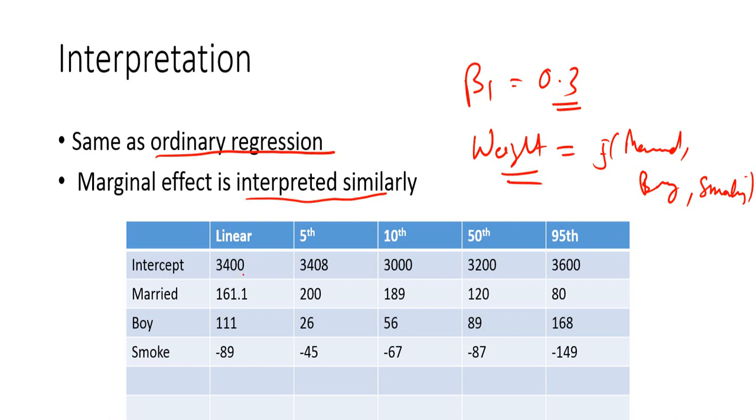In the linear regression, it predicts that the intercept is 3,400. If somebody is married, then the weight of the baby goes up by 161. That's the difference. On average, the weight of a kid or an infant born to a married woman compared to the unmarried woman, the difference of weight is 161.